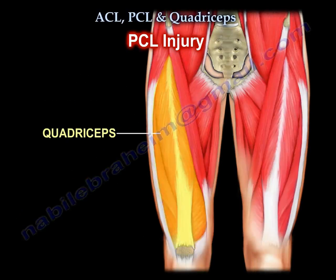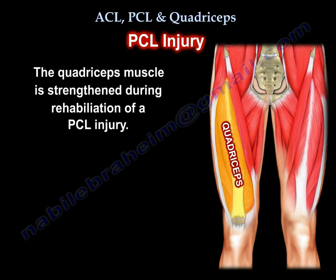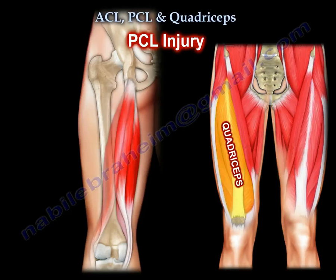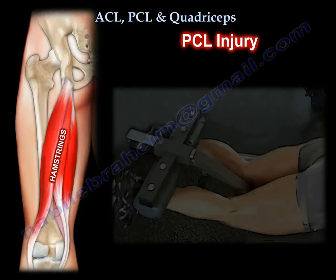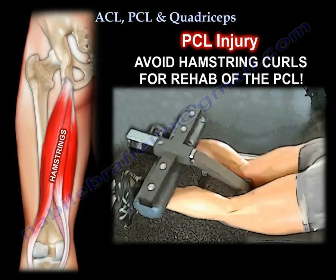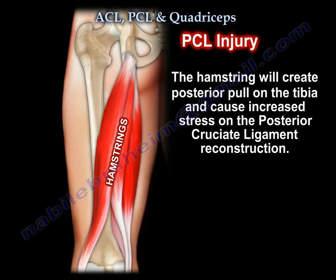The PCL loves the quadriceps because the quadriceps pulls the tibia anteriorly. So when you do rehab for the PCL, you use the quadriceps muscle. The posterior structure gets rehab using the anterior muscles — the quadriceps. The PCL does not like the hamstring. Early rehab post-surgery for the PCL should avoid prone hamstring curls, because the hamstring will create a posterior pull on the tibia which will increase stress on the graft.